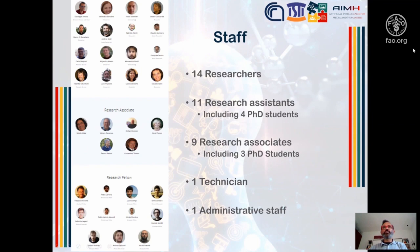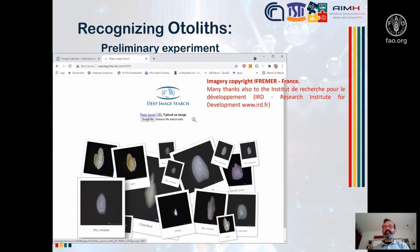The lab consists of about 36 people among researchers, research assistants, research associates, a technician, and a person taking care of administration. At the moment we have seven PhD students working in our lab. Let me now go to the preliminary experiments and the prototype that we built. Let me thank IFramer for providing us with the images for this experiment and also the Research Institute for Development in France for helping with this.